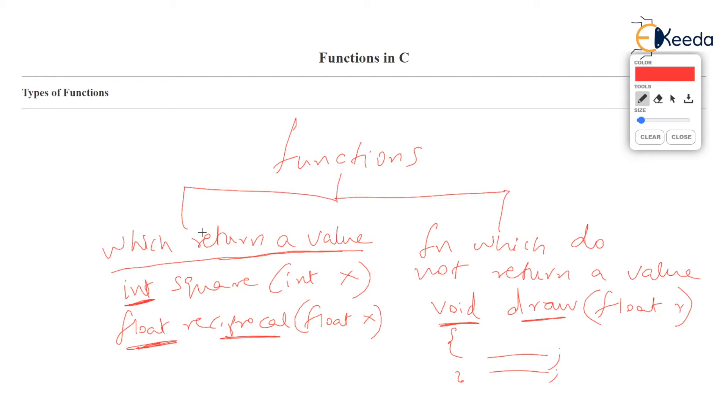You see, draw is the name of the function. And what is draw returning? Draw is returning void. Whenever a function has return type mentioned as void, then that function is said to be not returning any value.